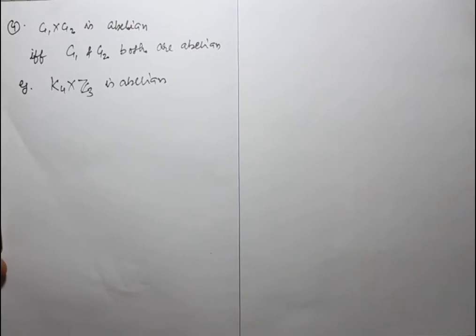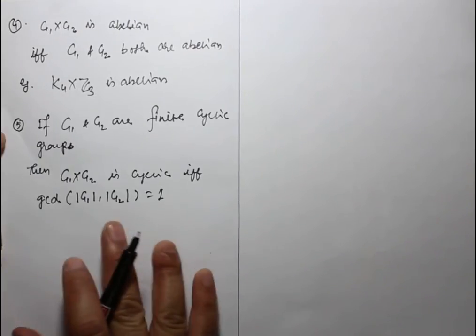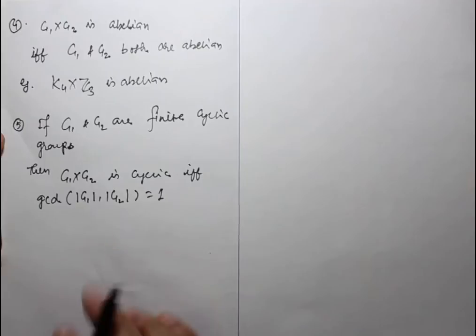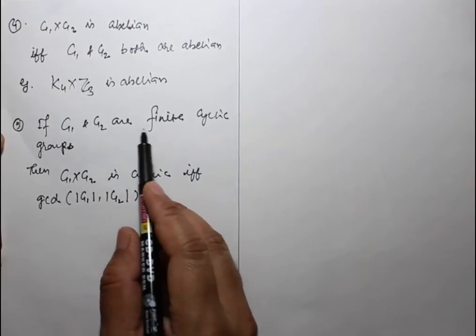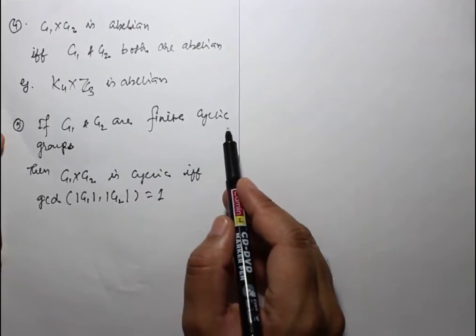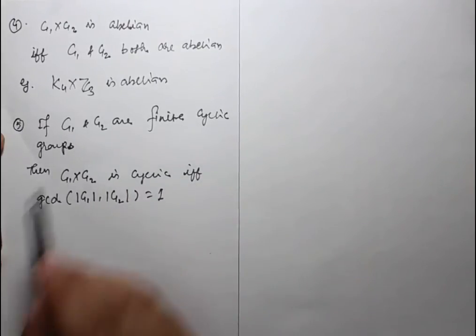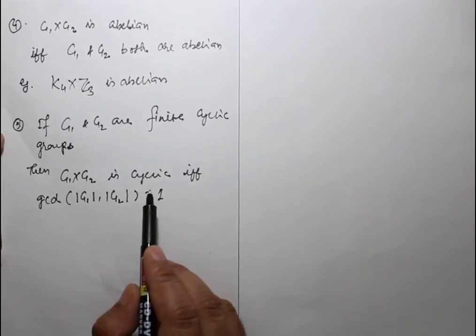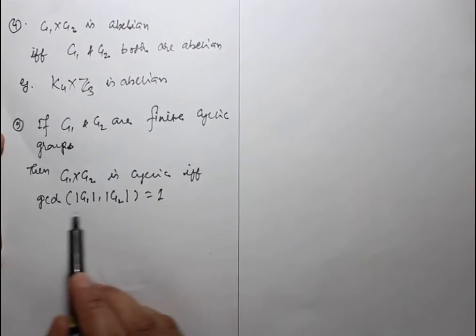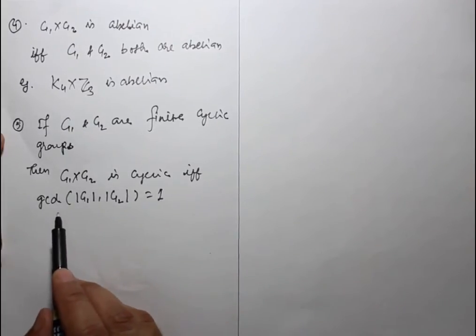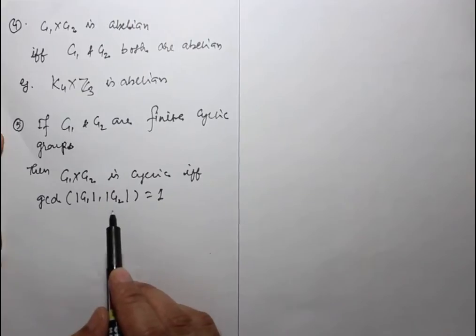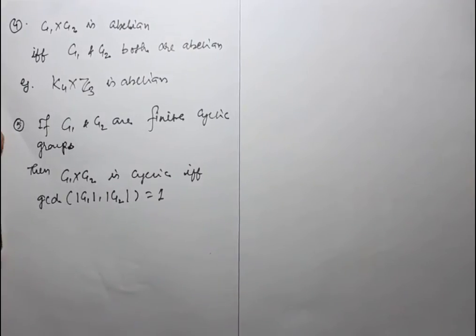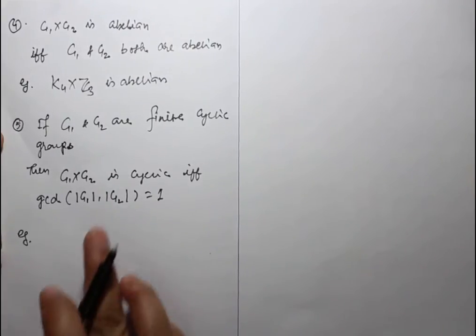Main application — very important property: If G1 and G2 are finite cyclic groups, then G1 cross G2 is cyclic if and only if the GCD of the order of G1 and the order of G2 equals 1.